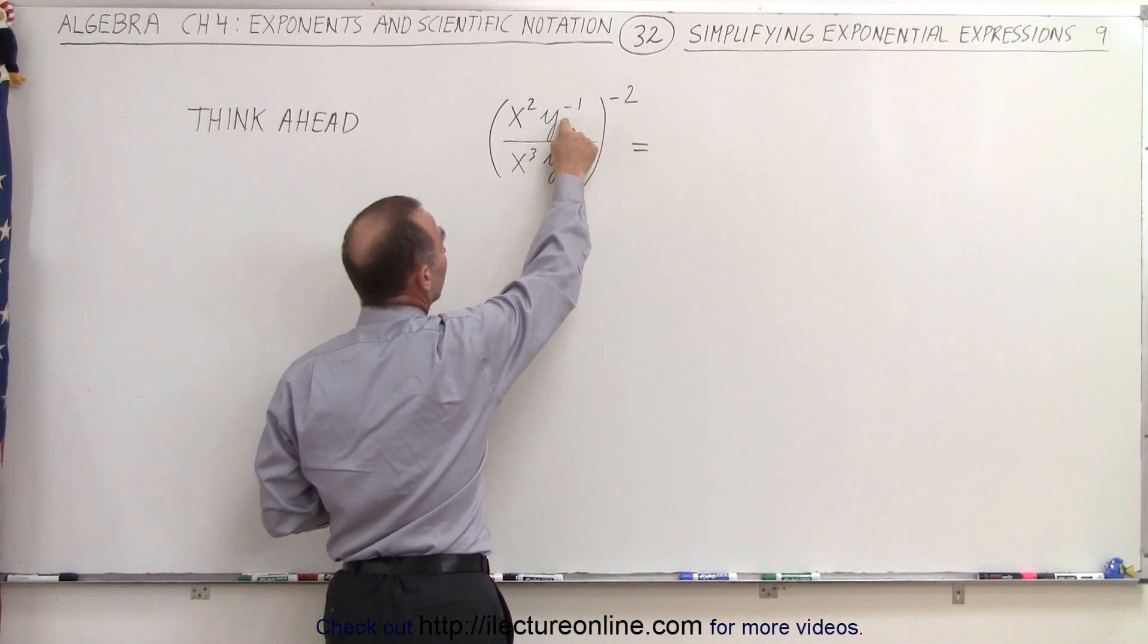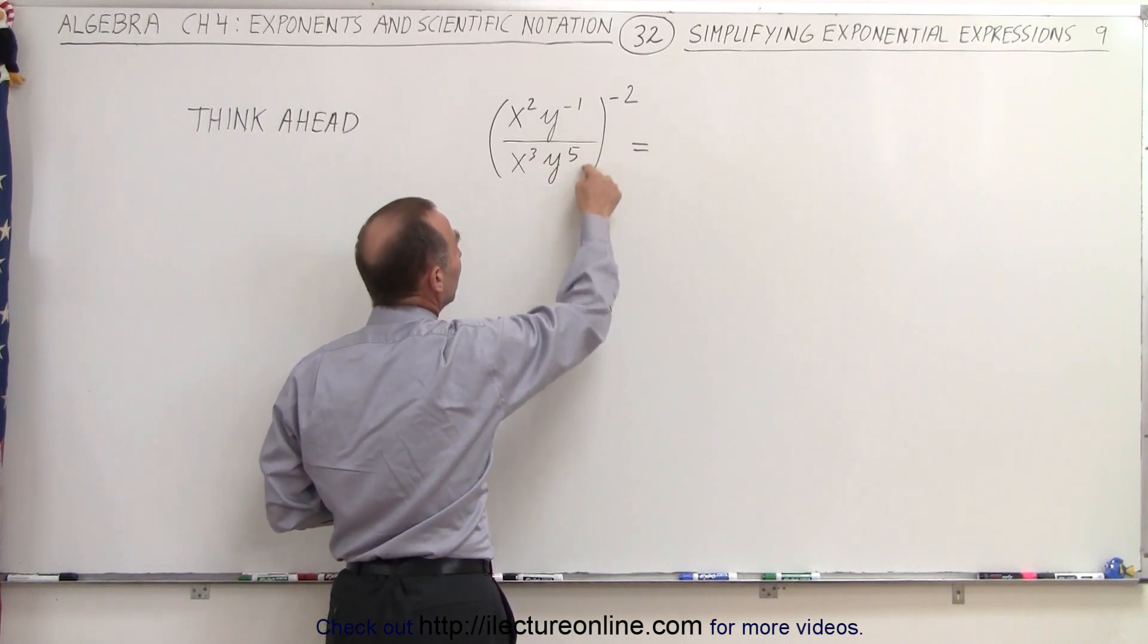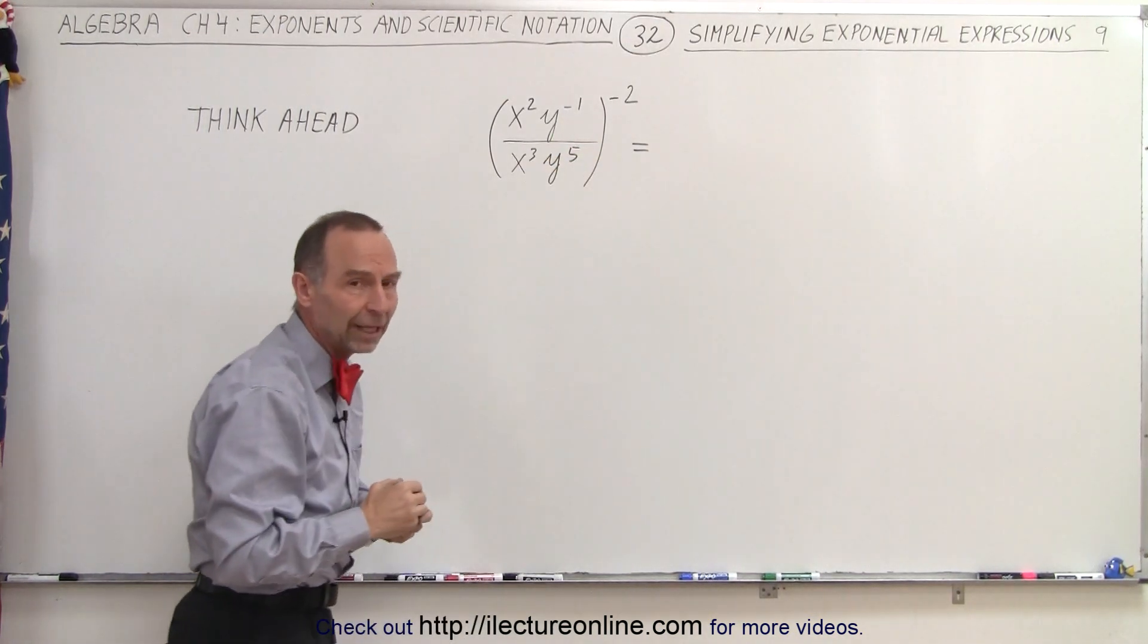Same with the y, we can bring the y to the negative one down, and we end up with a y with a positive exponent in the denominator.